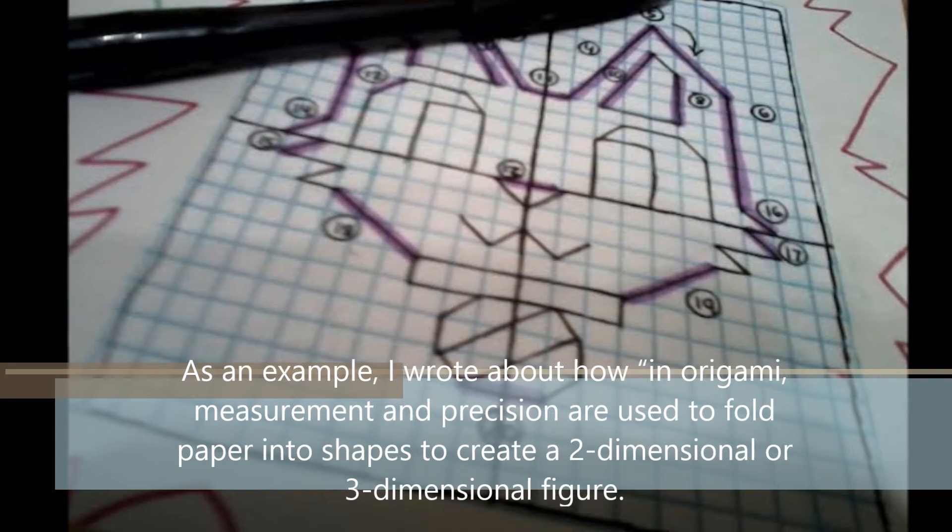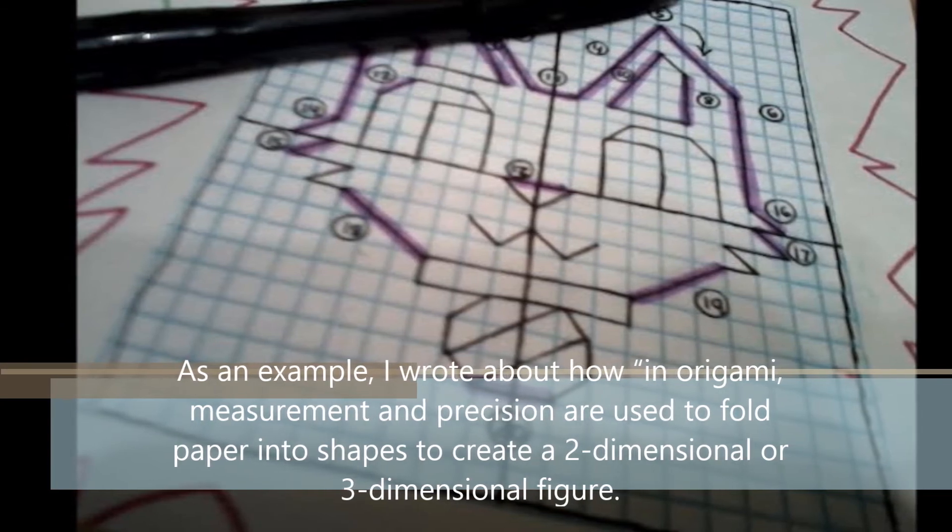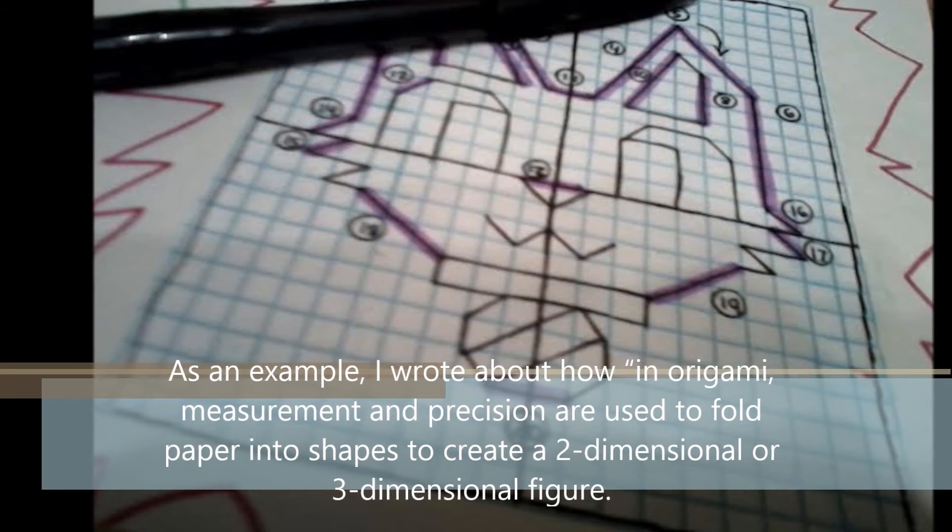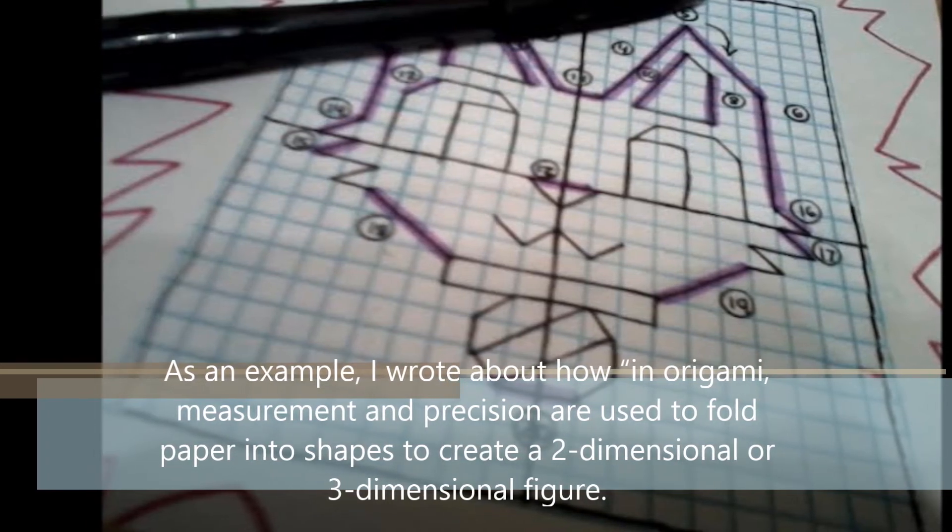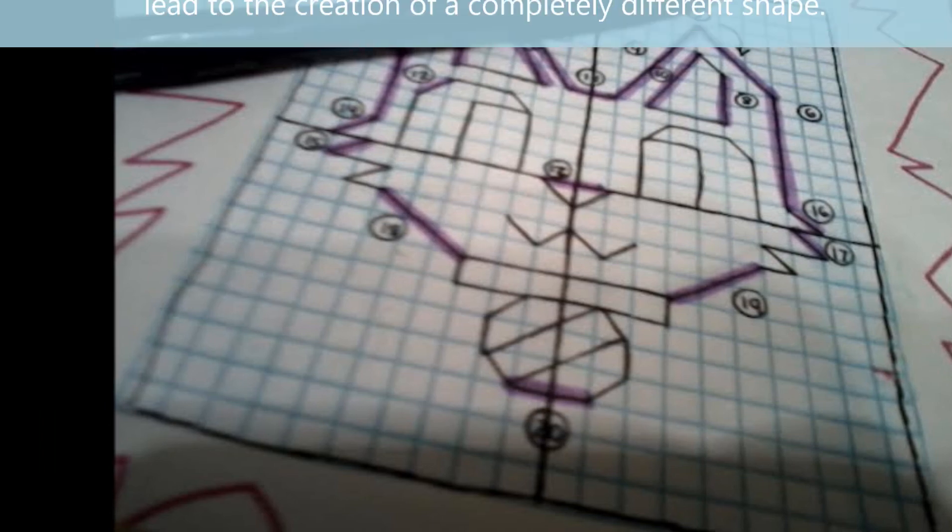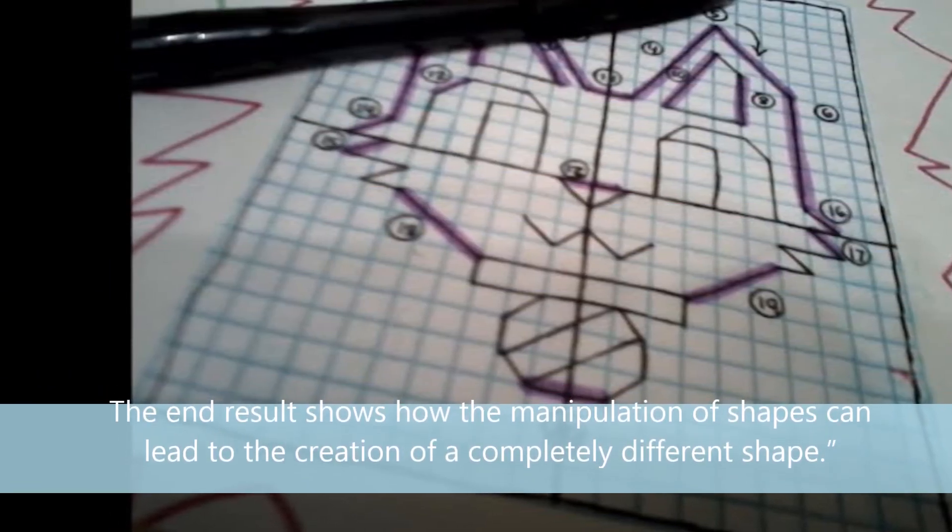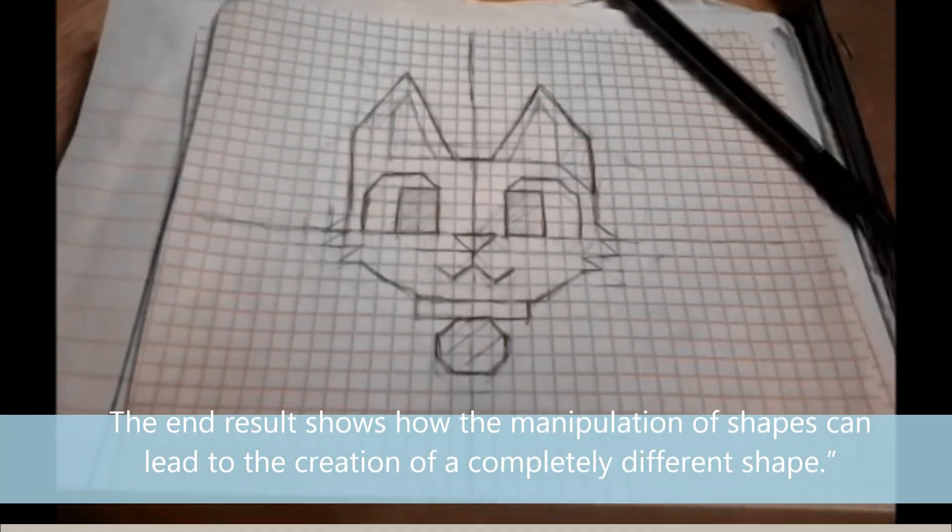As an example, I wrote about how in origami, measurement and precision are used to fold paper into shapes to create a two-dimensional or three-dimensional figure. The end result shows how the manipulation of shapes can lead to the creation of a completely different shape.